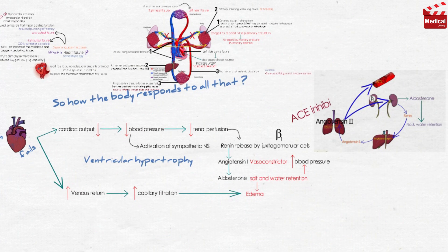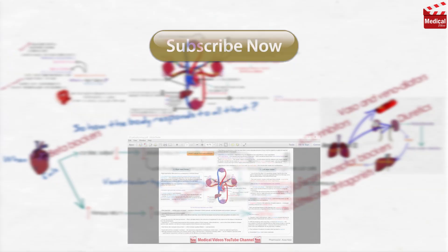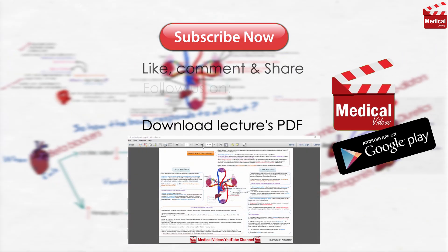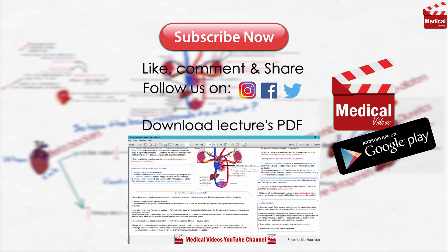The drugs that can be used in the management of heart failure are ACE inhibitors, angiotensin receptor blockers, aldosterone antagonists, beta blockers, diuretics, vasodilators and venodilators, and inotropic drugs — which will be discussed in the next lectures. That's all for this lecture; if it was useful, leave a like and a comment with your opinion, and subscribe if it's your first time here.